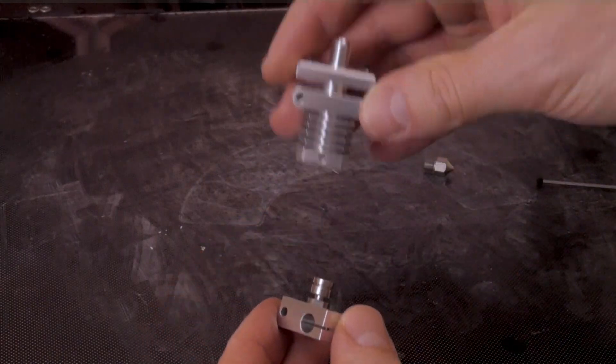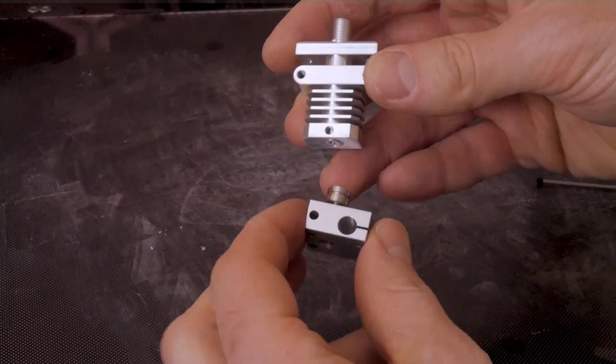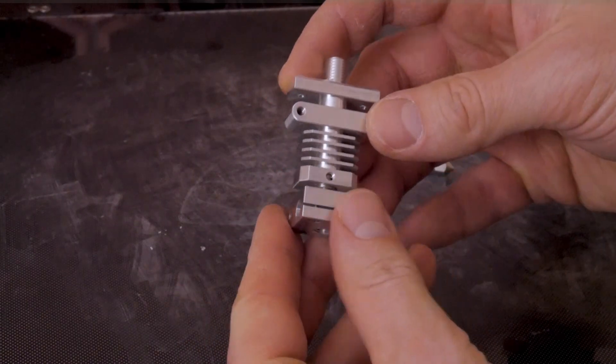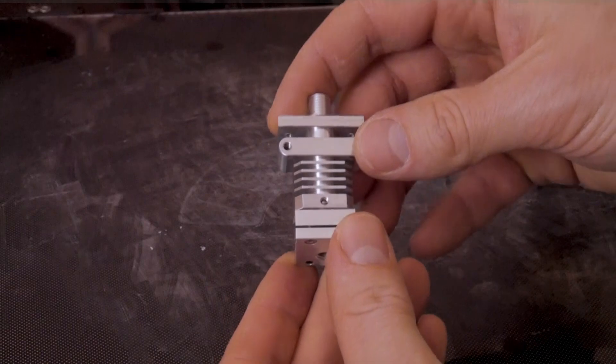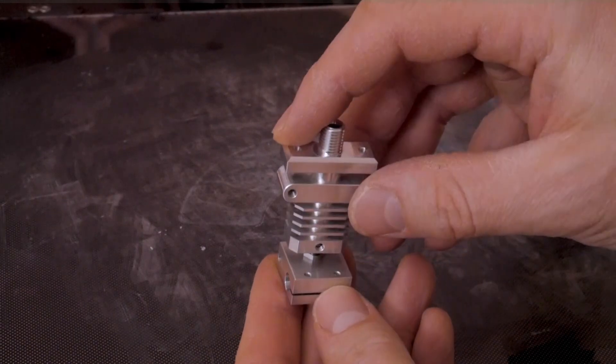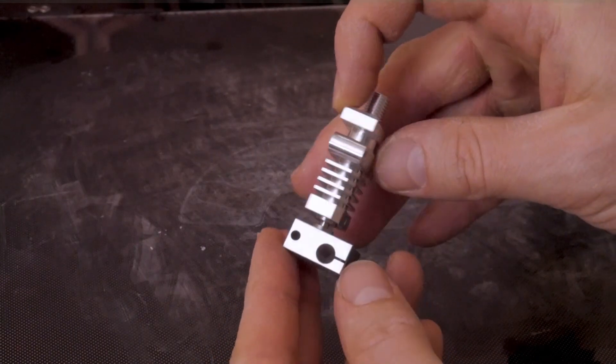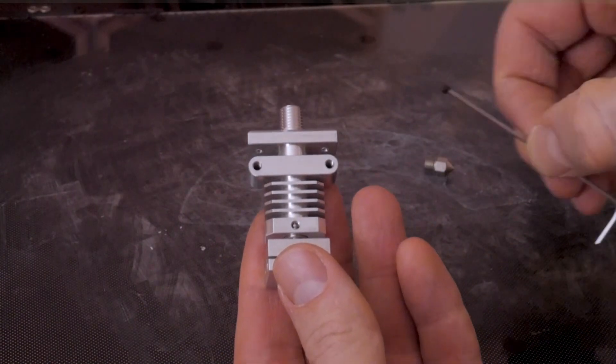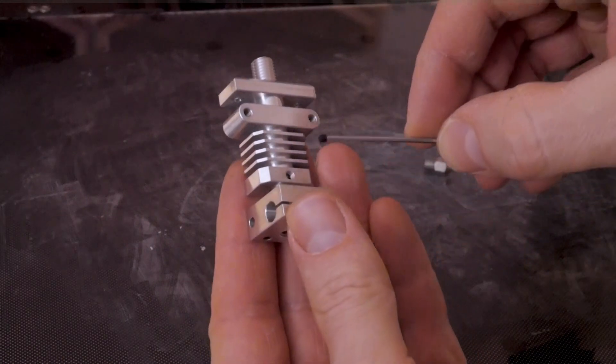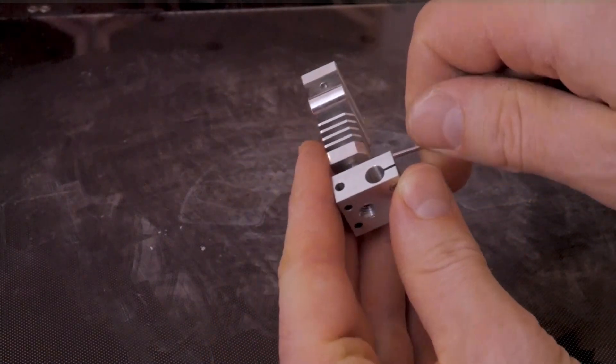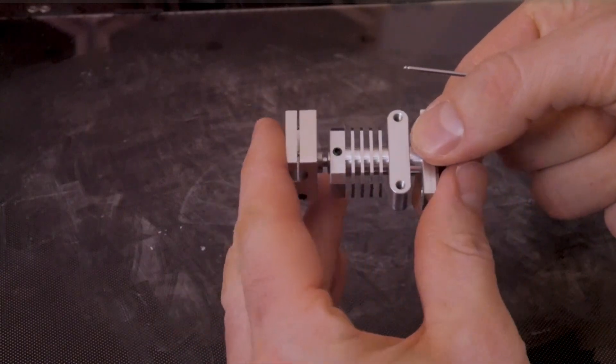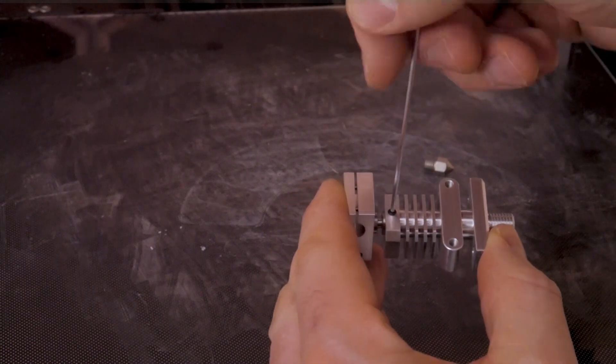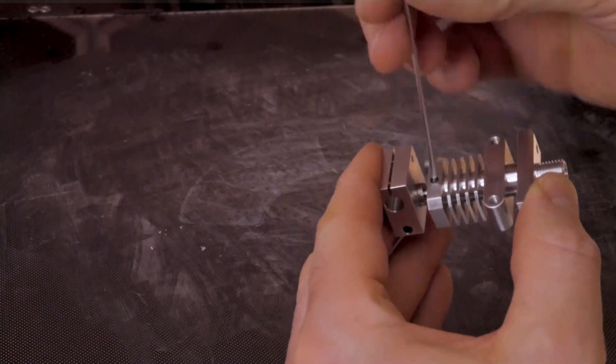Then we can take the heat sink body with the set screw facing forwards and drop that right onto the heat break. Pay close attention again to the orientation: the set screw facing forward, the holes for the heater cartridge and thermistor pointing out to the side. Then we can take the included set screw, drop that into the threaded hole, and just snug it down. Again, it doesn't have to be too tight. Later on we're going to heat the whole assembly up and give it a final torque, but for now it's just tight enough to hold it in place.